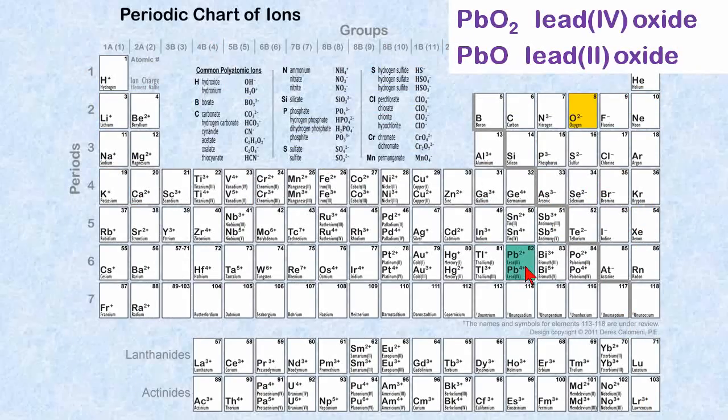Some of the transitional metals have variable charges. For example, lead two and lead four, positive two charge, positive four charge. When it combines and forms an ionic compound with oxygen, you get PbO2 and PbO, depending on which variable charge you use. It's either lead four oxide or lead two oxide. You need to have these Roman numerals to denote which variable ion of lead you're using.